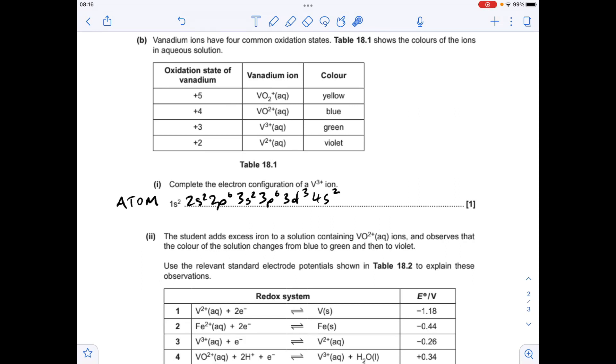Moving on to part B, so I'm starting with the electron configuration for the vanadium atom, which is up there. So to generate a 3 plus ion, we need to lose these two 4S electrons and one of these 3D electrons.